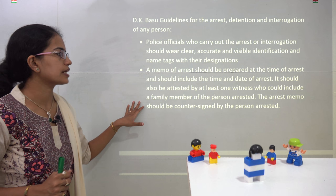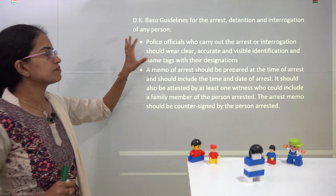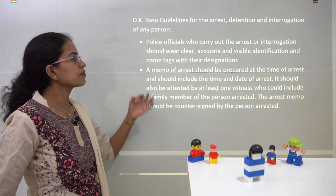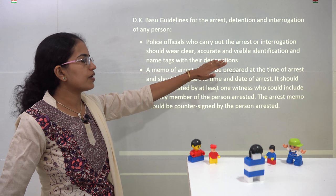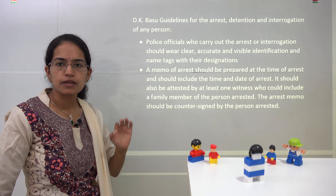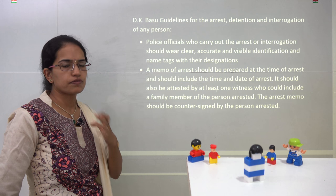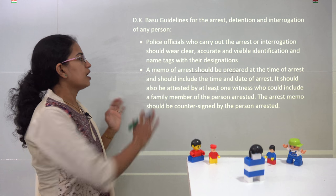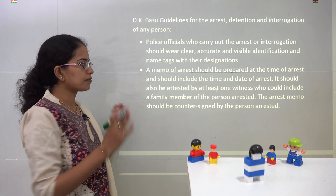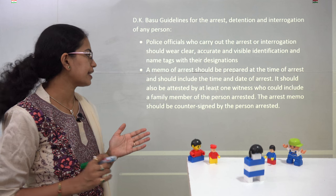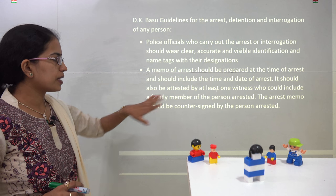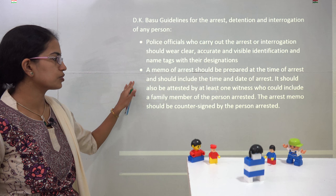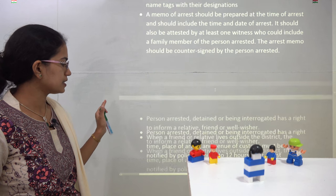What are the issues addressed under D.K. Basu's guidelines? First, a police officer carrying out an arrest should wear clear identifiable name tags, without which they cannot interrogate or arrest a person. A memo of arrest must be prepared during the time of arrest with the date and time, and it should be witnessed by at least one person, who could even be a family member of the arrested person.